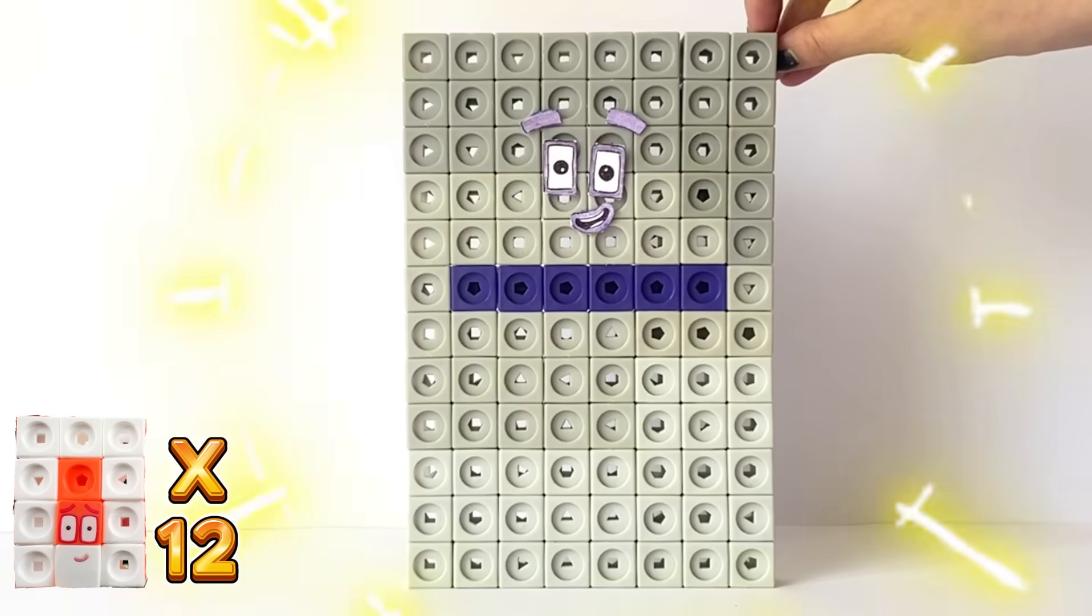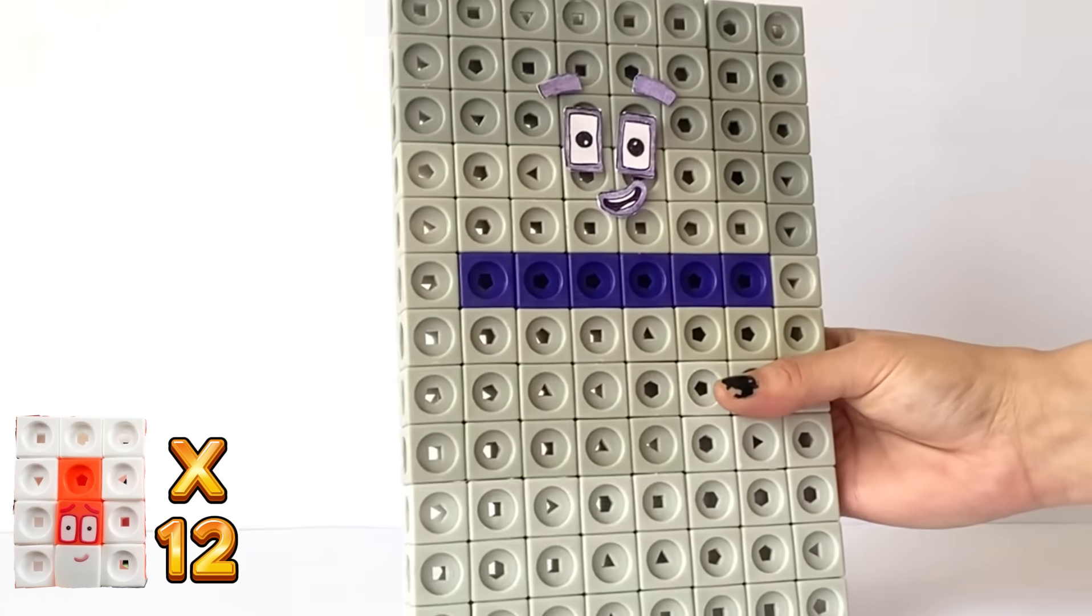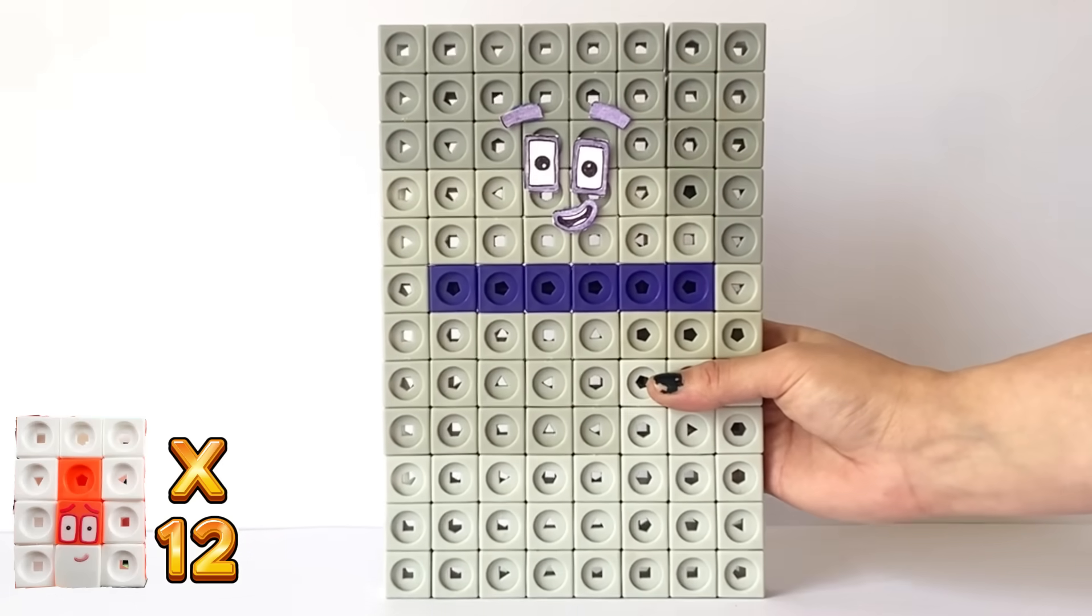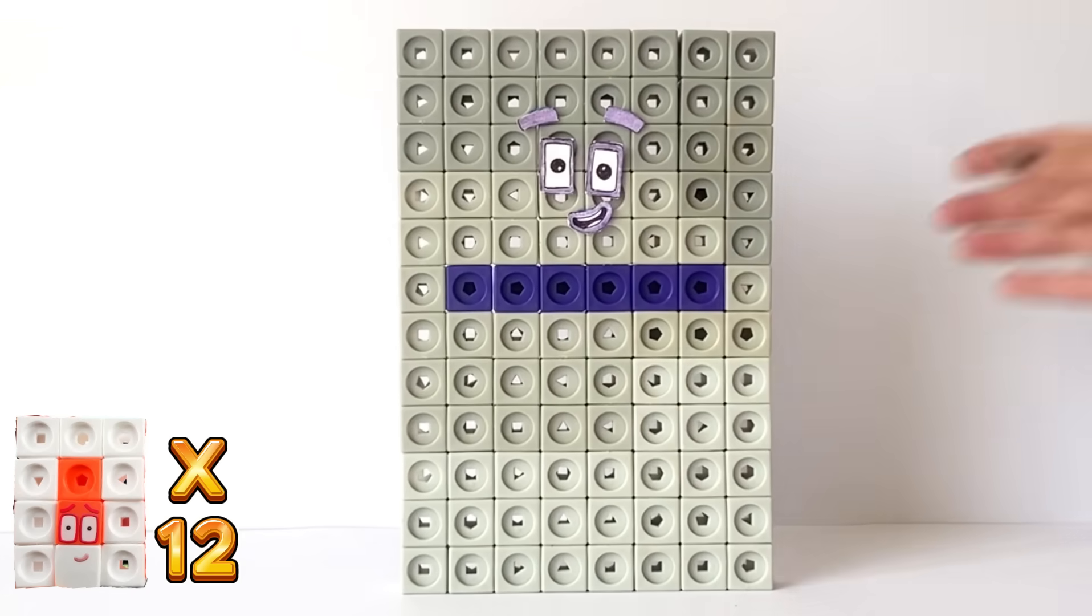Next we have 8 times 12 equals 96. NumberBlock 96 has large rectangle eyes as they can make many rectangles, and also has purple or indigo features like NumberBlock 6 to represent the number 6.